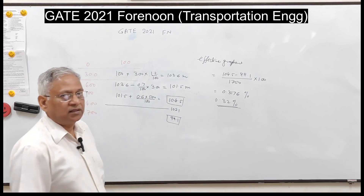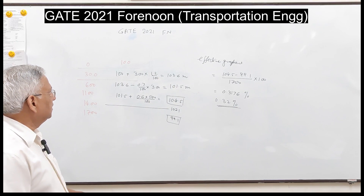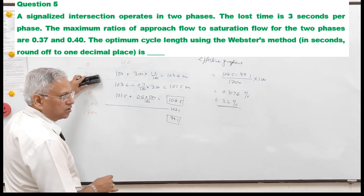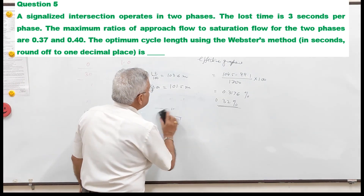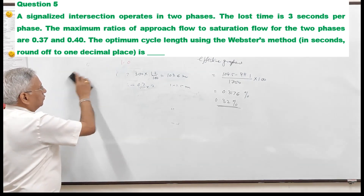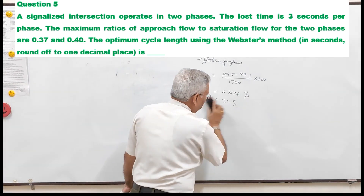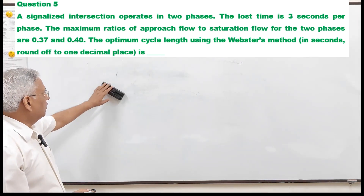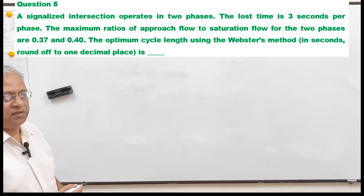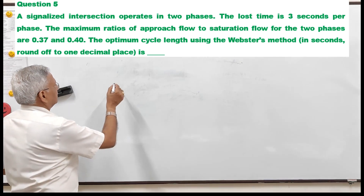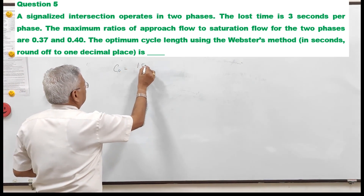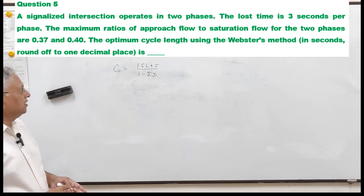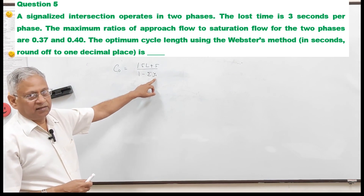Question five is on design of signals. A signalized intersection operates in two phases; the loss time is 3 seconds per phase, and the maximum ratios of approach flow to saturation flow for the two phases are 0.37 and 0.40. We need to find the optimum cycle length using Webster's equation: C₀ = (1.5L + 5) / (1 − ΣYi), where L is total loss time and Yi is the critical flow ratio for each phase.